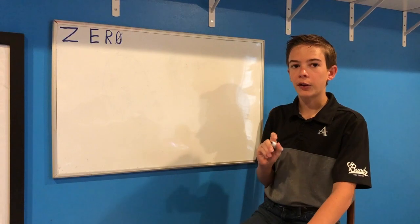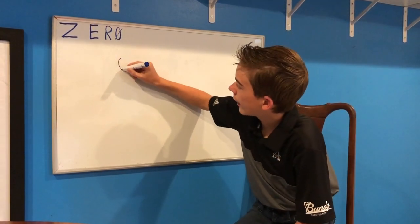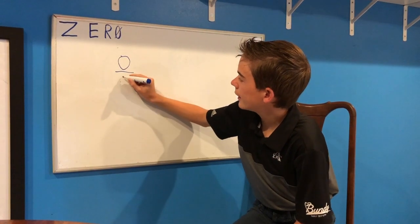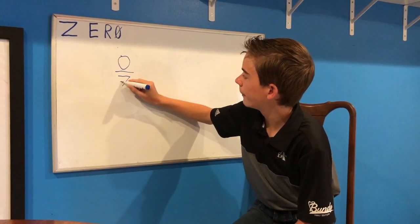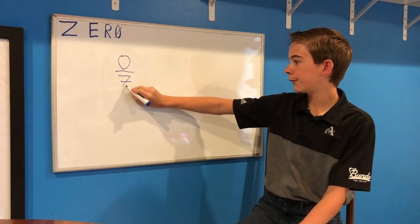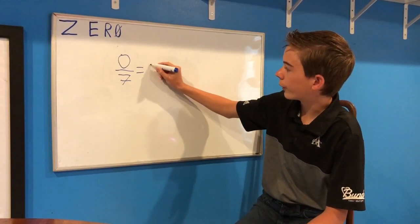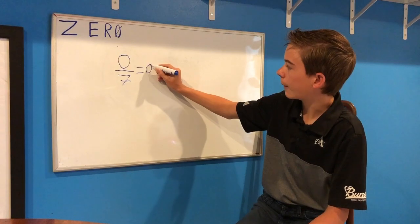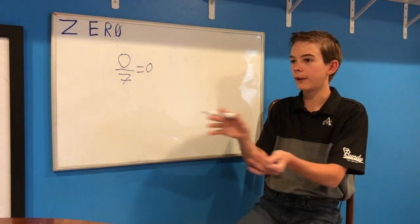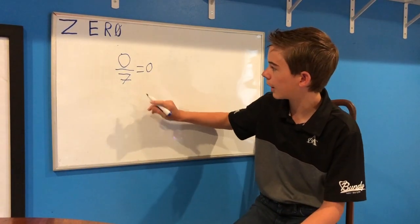First, with the weirdness of zero — if you have a fraction and you have zero divided by any number, let's just say seven, zero divided by seven, or any number in the denominator, equals zero. Because you have nothing trying to divide nothing into seven parts, you have nothing in each individual part.